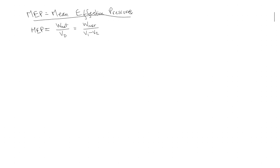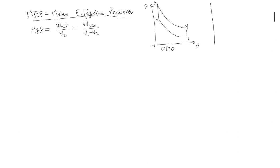The displacement volume is the big volume minus the small volume — it's always v1 minus v2, regardless of whether you have an Otto cycle or a diesel cycle. Here I'll draw two PV diagrams. For the Otto cycle, we compress isentropically, add heat at constant volume, expand isentropically, and remove heat at constant volume — with states one, two, three, and four. For the diesel cycle, we compress from one to two, add heat at constant pressure, expand, then remove heat at constant volume from three to four.